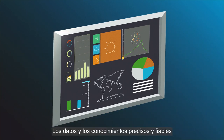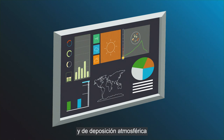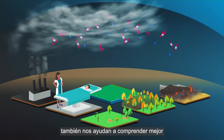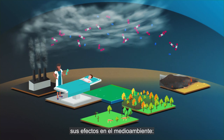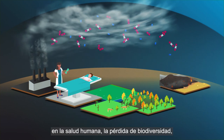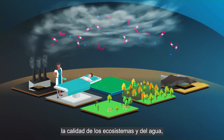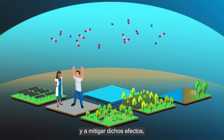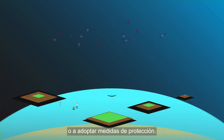Accurate, reliable data and knowledge about the levels of pollution and atmospheric deposition also help us to better understand their impacts on the environment, human health, biodiversity loss, ecosystems and water quality, and to either mitigate those impacts or put protective measures in place.